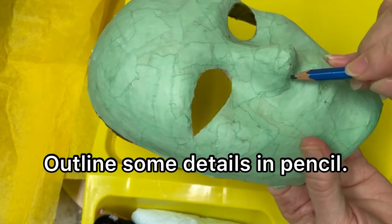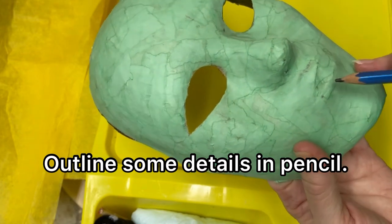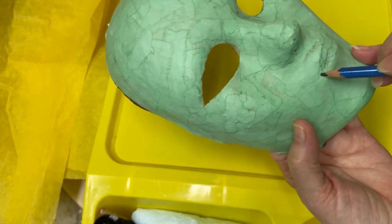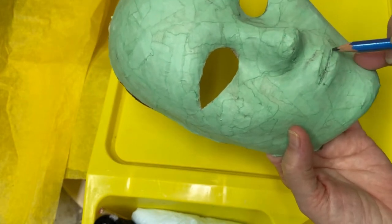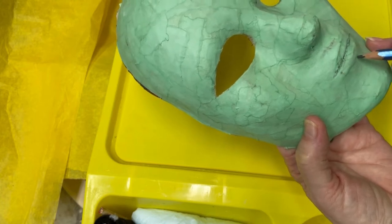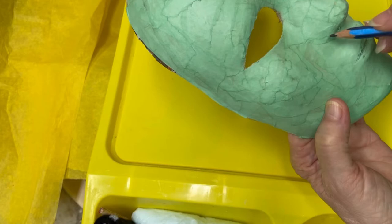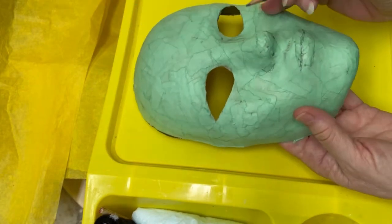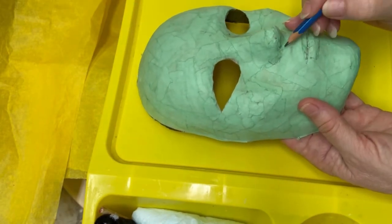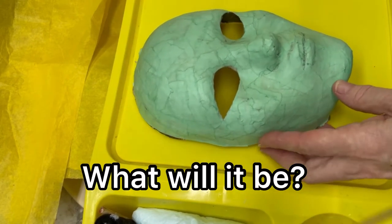We're going to outline with a pencil. We're just going to put in a few details so that the features will stand out. You can do this any way you like. It could be any type of mask, any kind of creature.